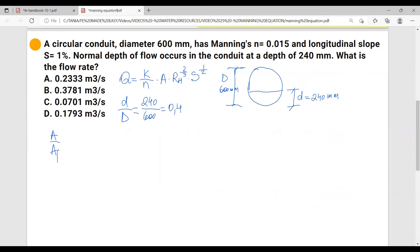So we have area over area of flow equals to 0.37, and also we have the R over RF equals 0.87.